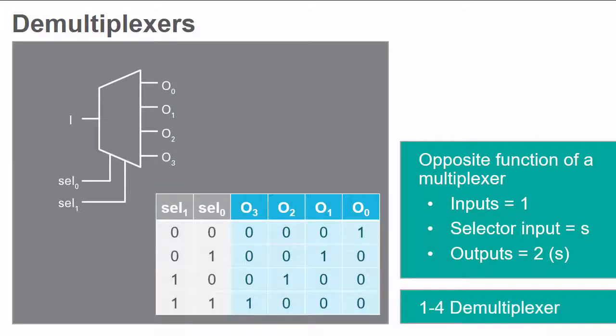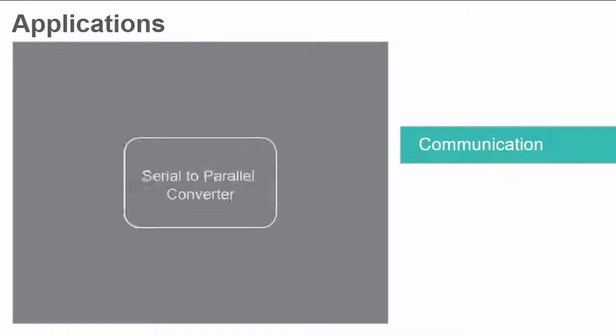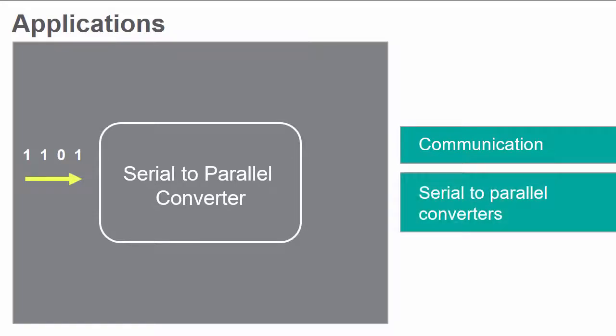Demultiplexers place the value of a single data input on several data outputs depending on a selection signal. For example, the truth table of a 1-4 demultiplexer indicates that its output depends on the values of the selectors. Since demultiplexers convert a single input to multiple outputs, they are commonly used for communication and serial-to-parallel converters.